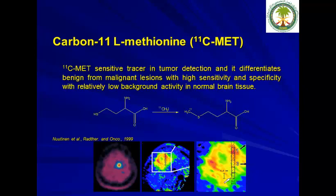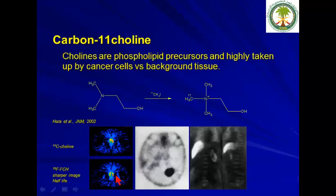Carbon-11 L-methionine is a sensitive tracer in tumor detection, differentiating between benign and malignant lesions with high sensitivity and specificity and low background activity in normal brain tissue, providing very good sharp images for brain tumors.